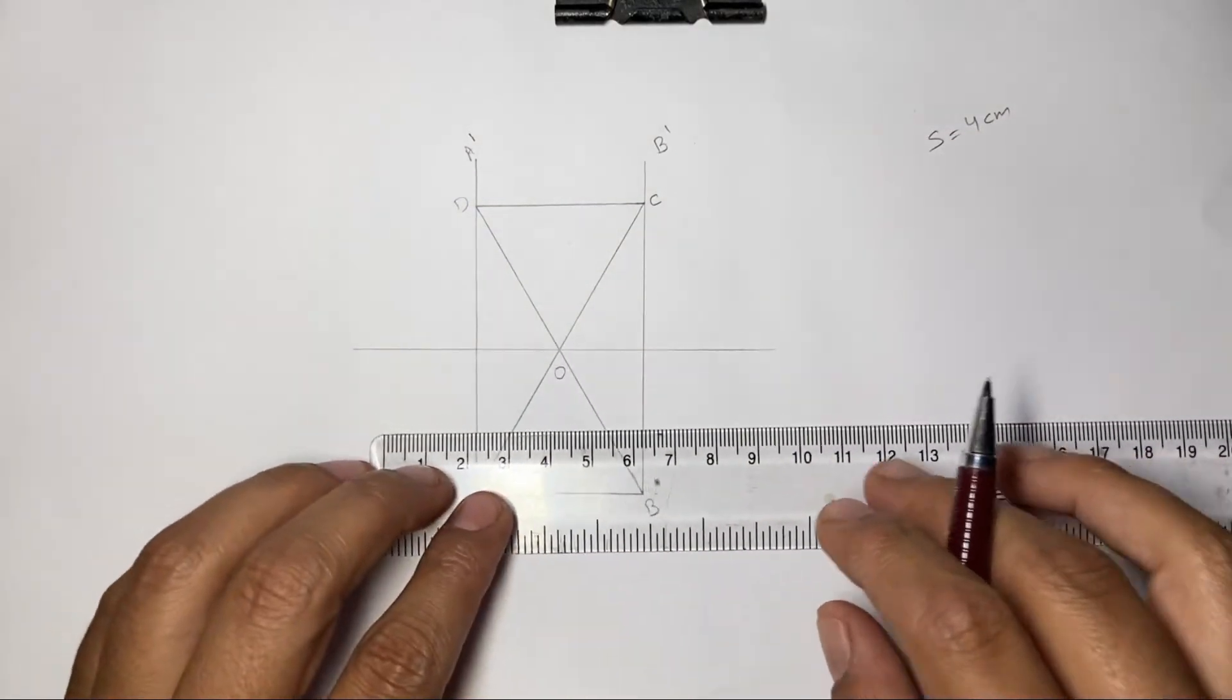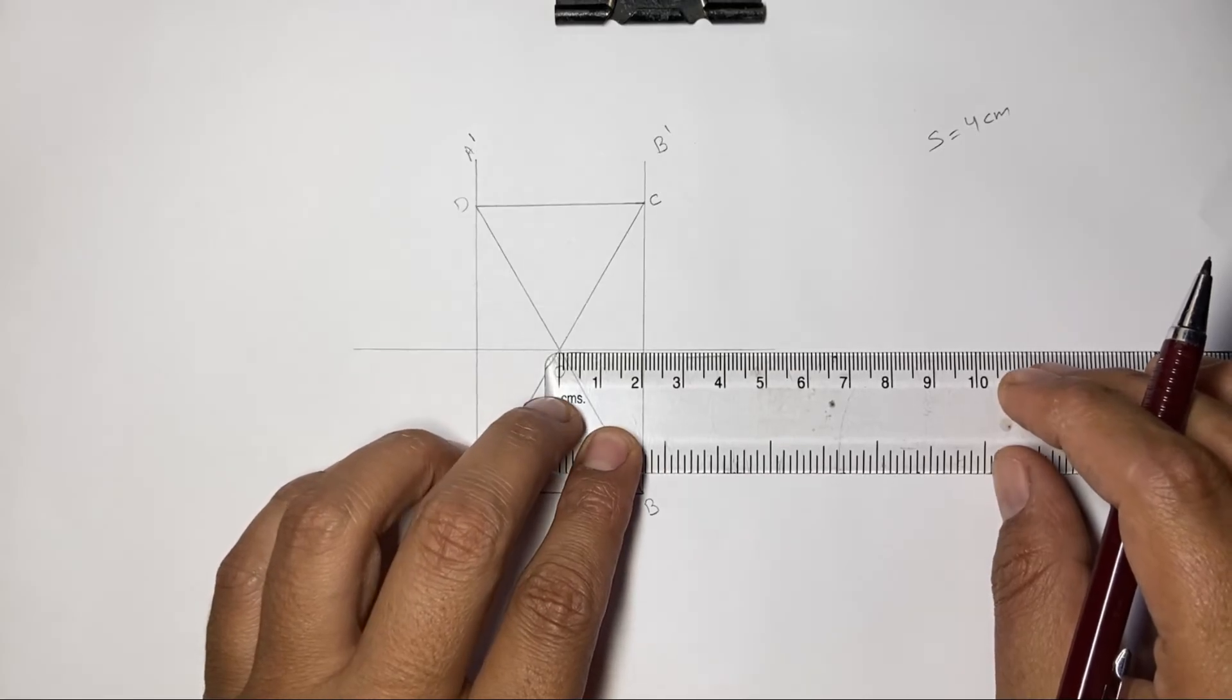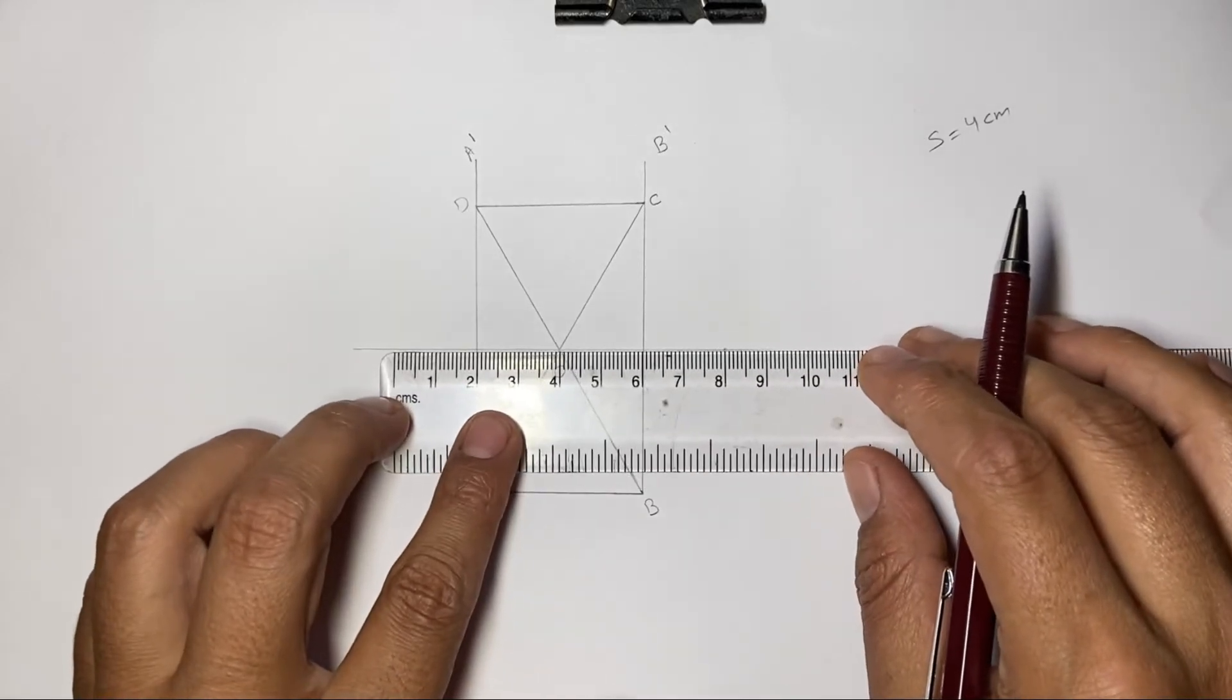Now measure 4 centimeters from point O to one side of this line and 4 centimeters to the other side of this line.